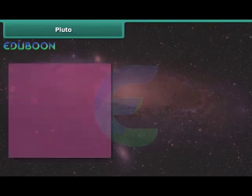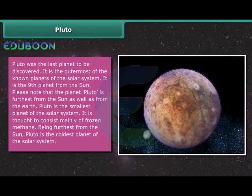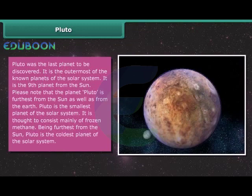Pluto. Pluto was the last planet to be discovered. It is the outermost of the known planets of the solar system. It is the ninth planet from the Sun. Please note that the planet Pluto is the farthest from the Sun as well as from the Earth. Pluto is the smallest planet of the solar system. It is thought to consist mainly of frozen methane. Being farthest from the Sun, Pluto is the coldest planet of the solar system.